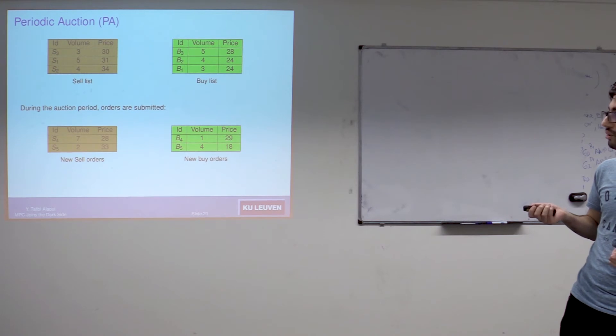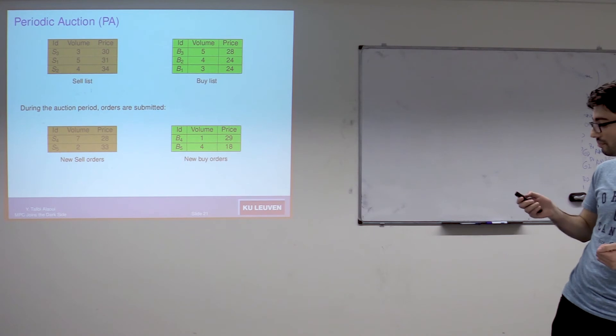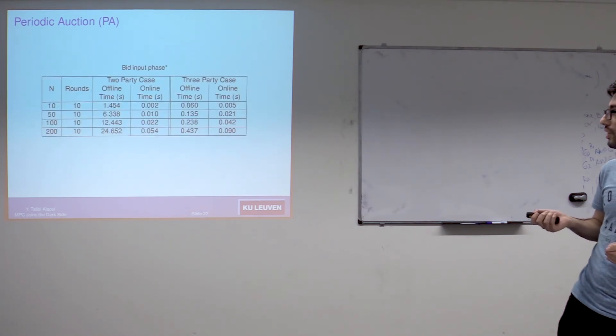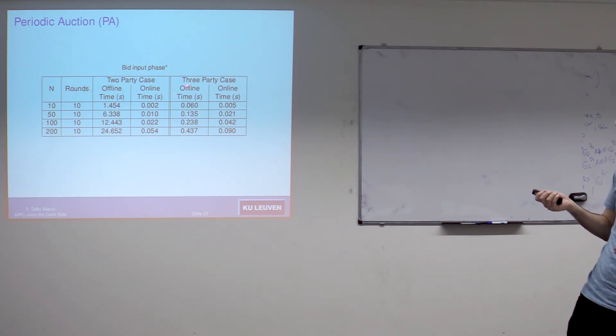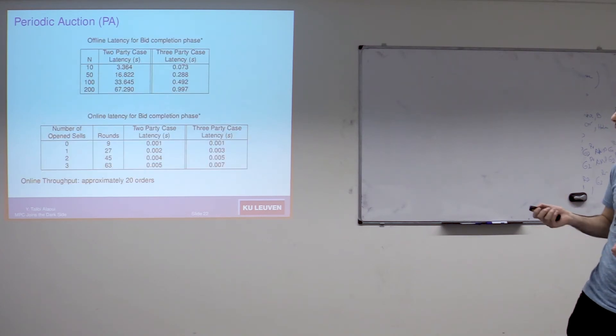We have three steps here: we have the input phase, the matching phase, and then we have the price calculation phase. For the input phase, we found the same runtime: the offline time takes more time for the two-party case than the three-party case, and the other way around for the online time. The same thing for the second step, which is the bid completion phase.